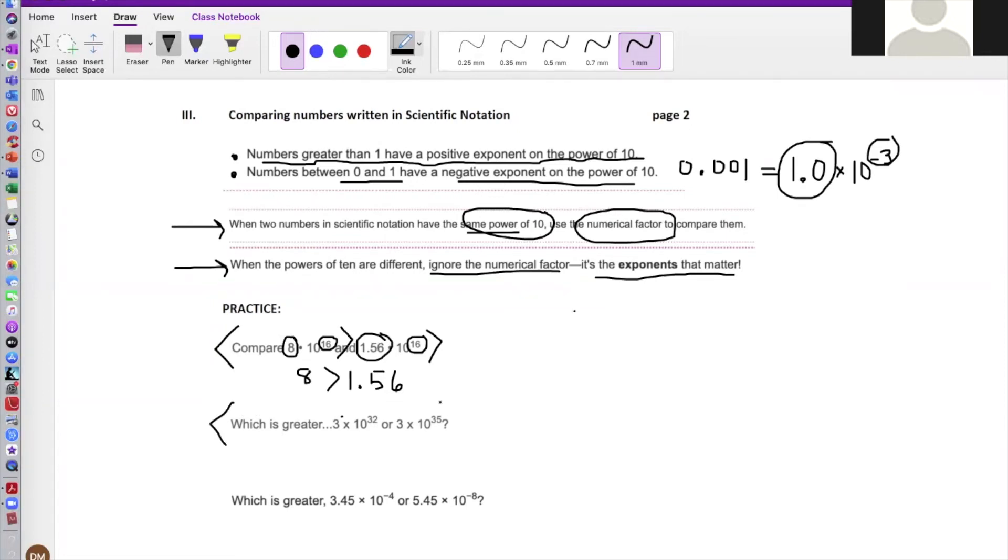Okay, now let's take a look at this example right here, which is greater: 3 times 10 to the 32nd power or 3 times 10 to the 35th. Well, notice now we're on this rule here. When the powers of 10 are different, ignore the numerical factor, it's the exponents that matter. So I don't have to worry about what this number is here, the numerical factor. I notice that because this power is greater than this one right here, this one right here has to be the bigger number. Even if this was like a number bigger than 3, let's say this was a 9, 9 times 10 to the 32nd power, that doesn't matter that 9 is bigger than 3 because the exponent, the 35 here, is greater than the power over here. This second one is going to be greater regardless of the numerical factor on each.